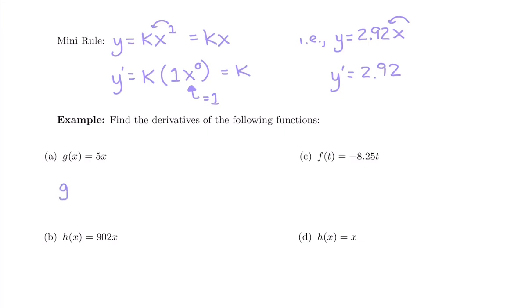Running through these other mini rule examples: g of x is 5x — you could try to bring down the power, but since it's x to the first power, the derivative of 5x is 5. That's our mini rule. For h of x, the derivative h prime of x — the derivative of 902x is 902.